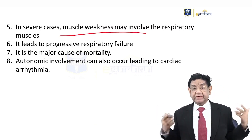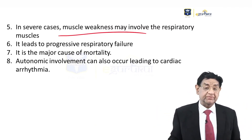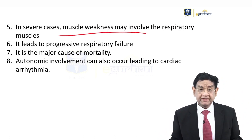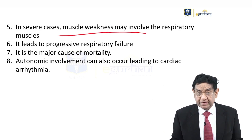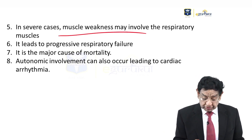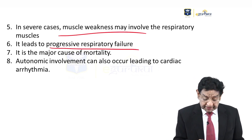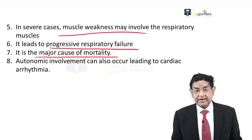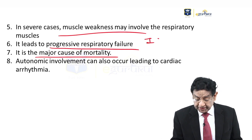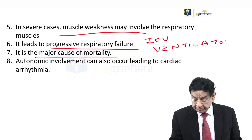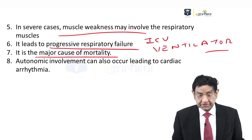In severe cases, the weakness may involve the respiratory muscles. As it is rising from the legs to the thigh and abdomen up to the chest, the diaphragm can get paralyzed, leading to respiratory failure. That is a major cause of mortality. That is why whenever we have a case of GBS, it should always be managed in the intensive care unit where we have facilities for ventilation. Autonomic nervous system involvement can also occur, leading to cardiac arrhythmias — another reason the patient should be managed in ICU.